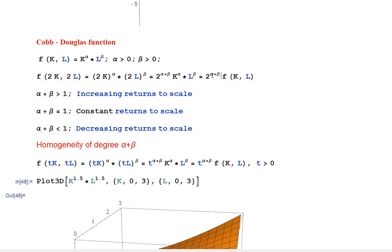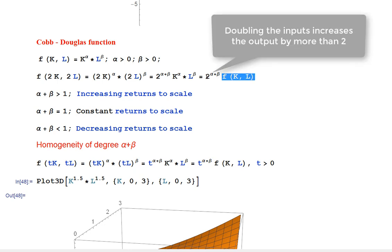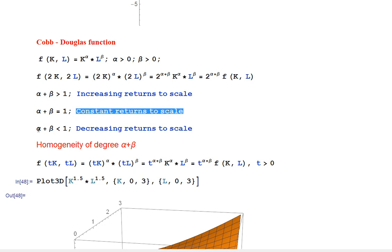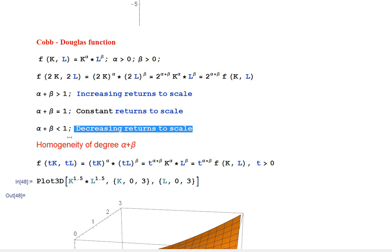This explains the role of the sum alpha plus beta. For example, if alpha plus beta is larger than one, then doubling the inputs results in output growing by more than a factor of two. There are three cases: when alpha plus beta is greater than one, we say the production function exhibits increasing returns to scale; when it equals one, it exhibits constant returns to scale.